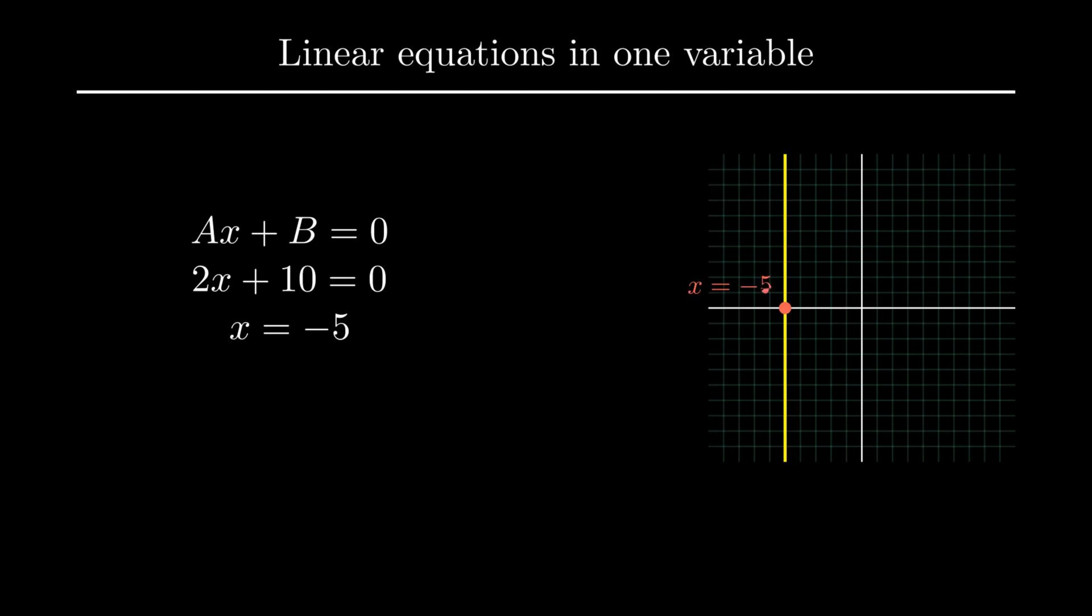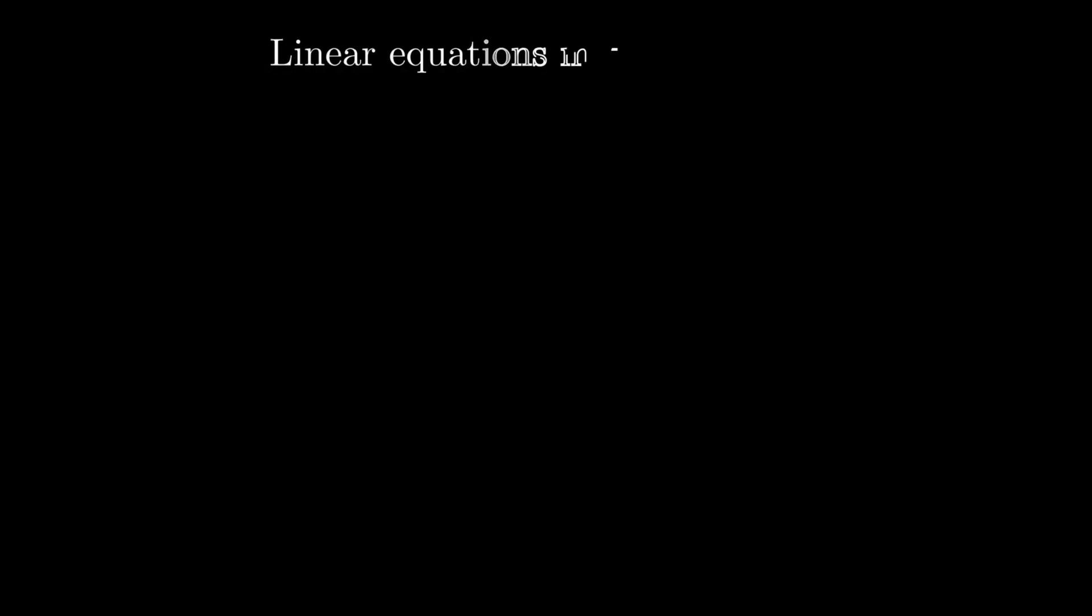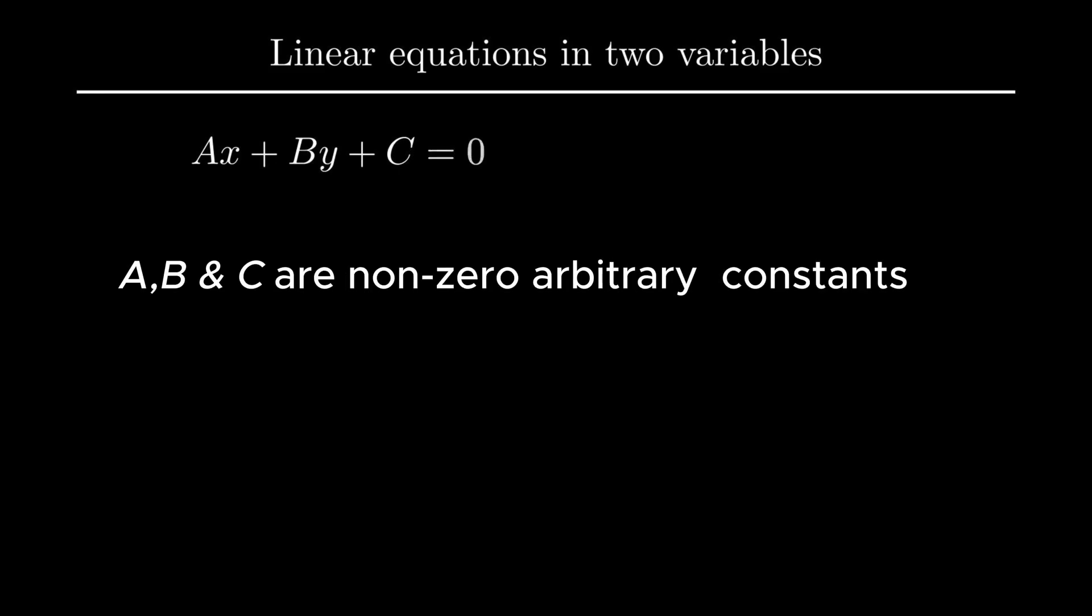But if we have to deal with linear equations consisting of two different variables, linear equation in two variables is in the form ax plus by plus c equal to zero where a, b and c are non-zero arbitrary constants.